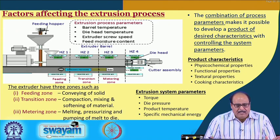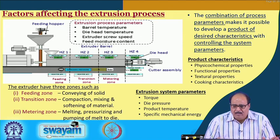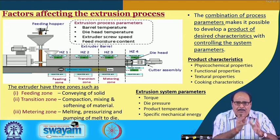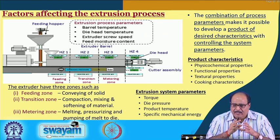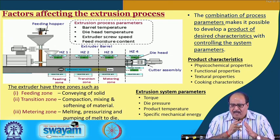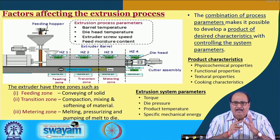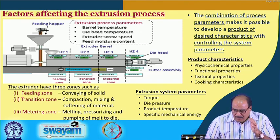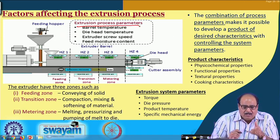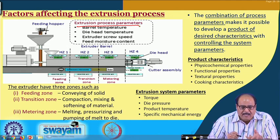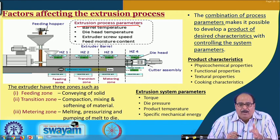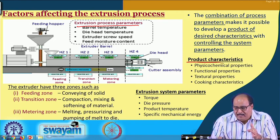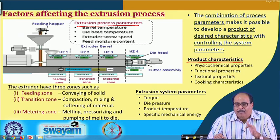Regarding factors affecting the extrusion process, by having an appropriate combination of the process parameters we can produce a product of desired characteristics and get the desired system parameters. The important extrusion process parameters include barrel temperature, die head temperature, extruder screw speed and feed moisture content. The product characteristics include physical chemical properties, functional properties, textural characteristics and cooking characteristics.